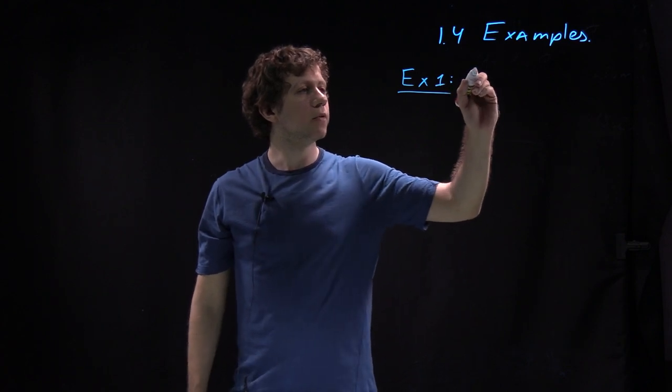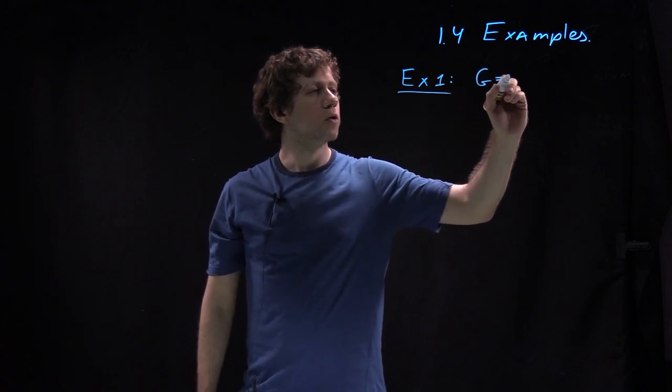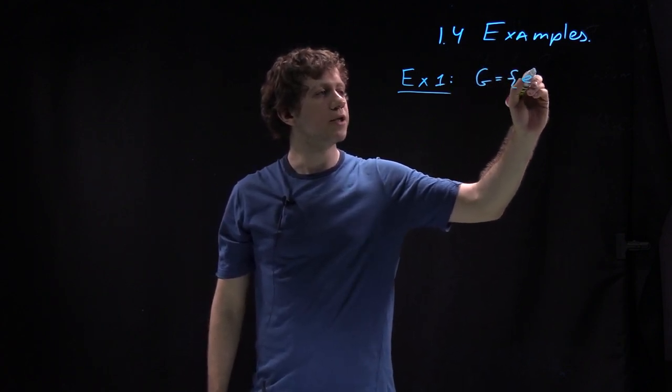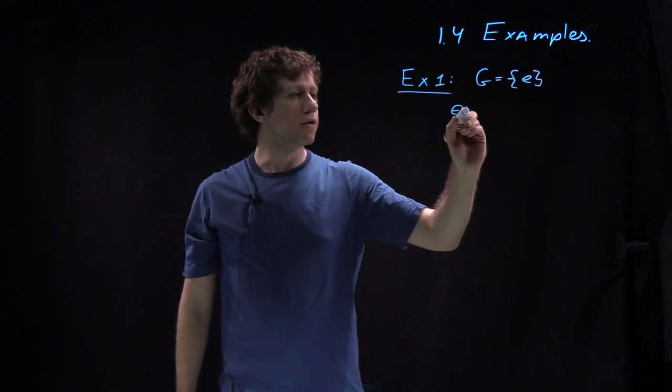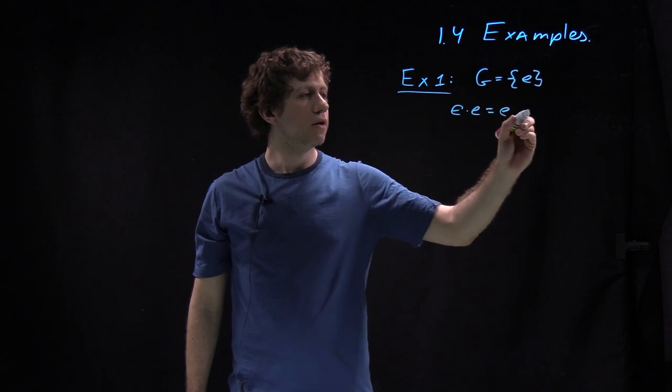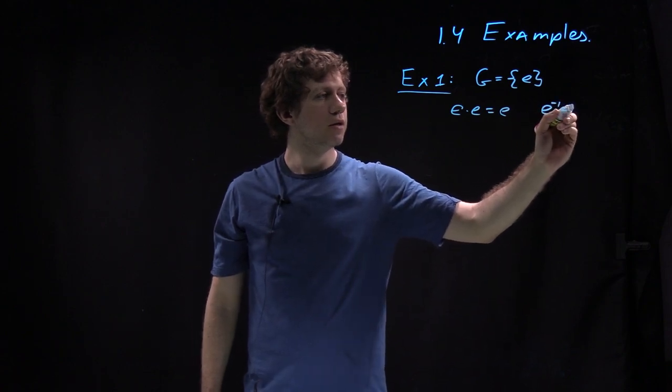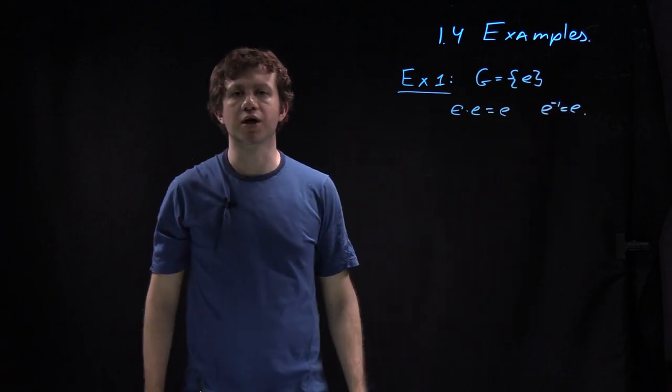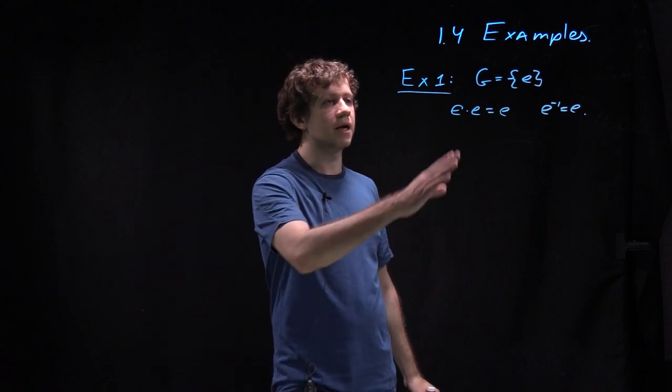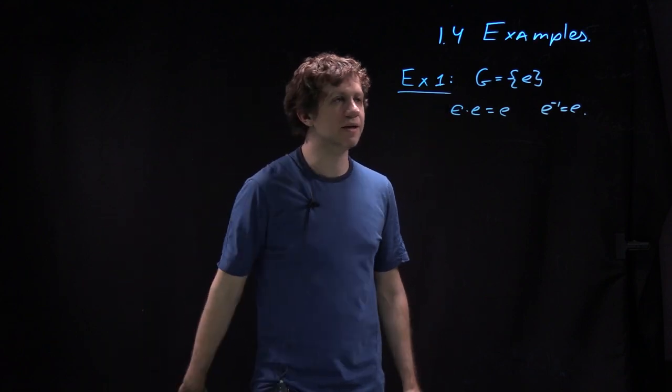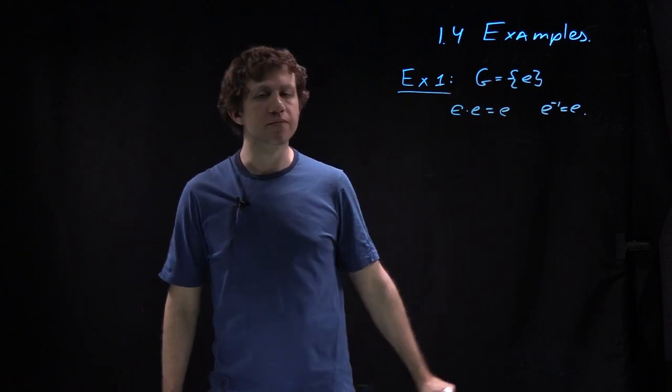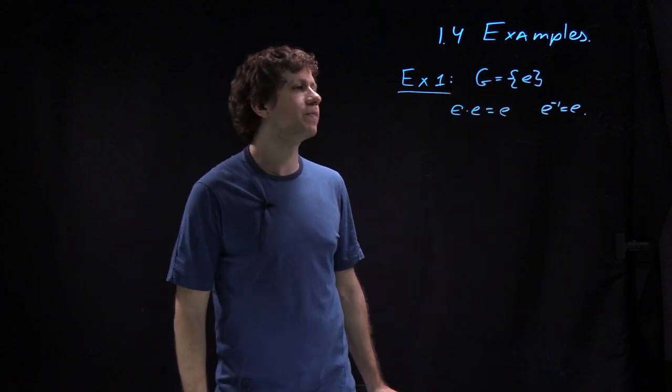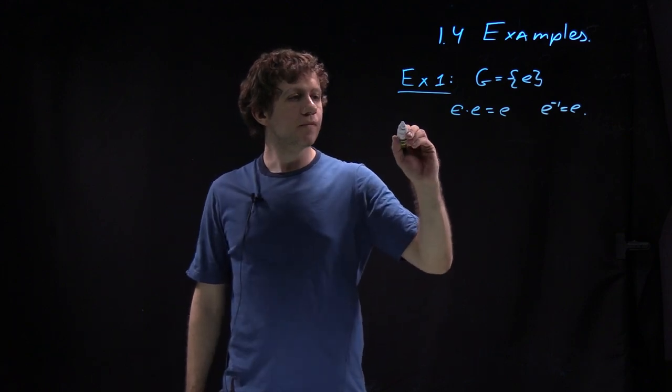So example one will be a group G, which is just a set with one element. And then this element has to be a unit. And then of course E times E is E, and E inverse is E. And it's completely trivial to check that all definitions hold. And this is a group of symmetry of a whale, I described at first class. So this is the most simple group, appears all the time.